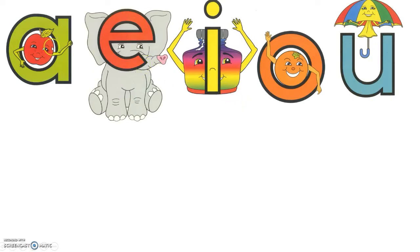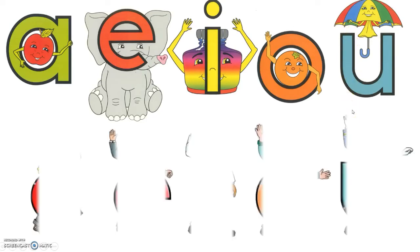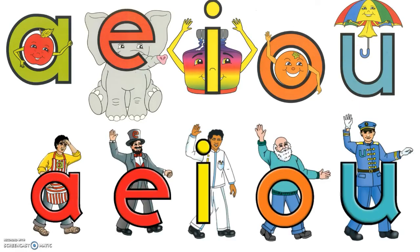Here you see the short vowels: ah, oh, and up. Now what are the long vowels, you may ask? Here they are: Mr. A, Mr. E, Mr. I, Mr. O, and Mr. U. What are their sounds? Well, their sounds are exactly like their names.